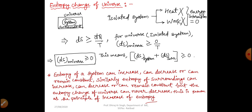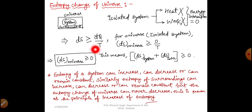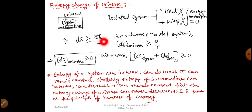The unit of entropy: since δQ is in kilojoules and T is in Kelvin, the unit of entropy is kJ/K. For specific entropy (per unit mass), the unit is kJ/kg·K. Entropy is an extensive property because it depends on mass. Specific entropy is the intensive form. That is all for today's class. Thank you.